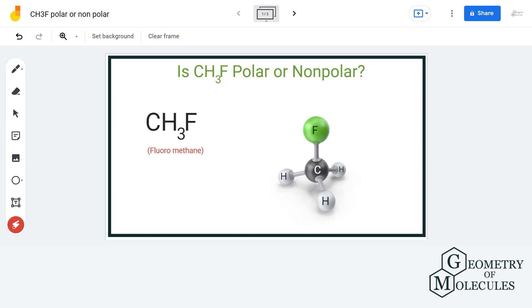As you can see, it has tetrahedral geometry and carbon here is forming four single bonds, three with hydrogen and one with fluorine atom. Polarity of any molecule is determined by the net dipole moment in the molecule.